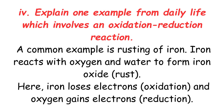Short Question 4: Explain one example from daily life which involves an oxidation-reduction reaction. A common example is rusting of iron. Iron reacts with oxygen and water to form iron oxide (rust). Here, iron loses electrons (oxidation) and oxygen gains electrons (reduction).